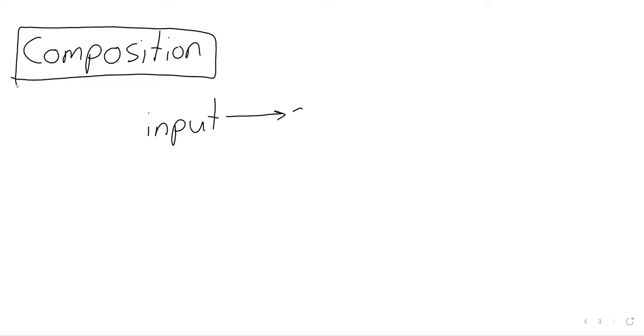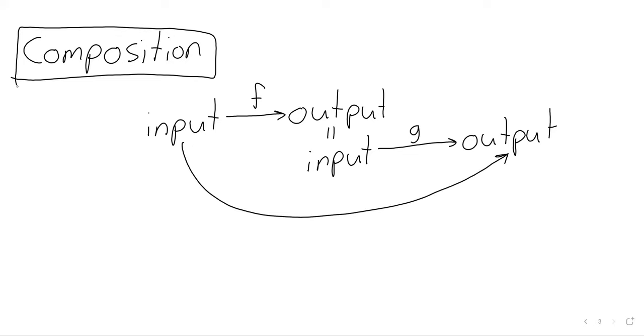In real-world terms, it happens if you have one function. Functions have inputs and outputs. And then the output of that first function is the input of a second function. And composition cuts out the middle man, as it were, and goes from the first input to the last output. And composition is written in reverse, we recall.